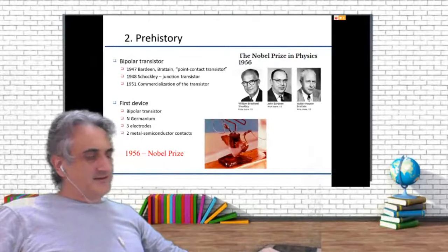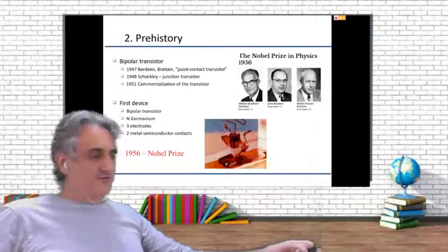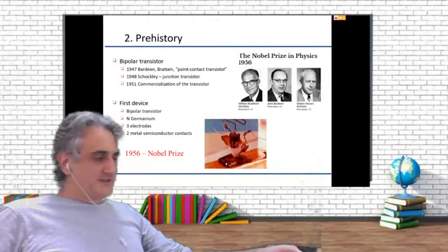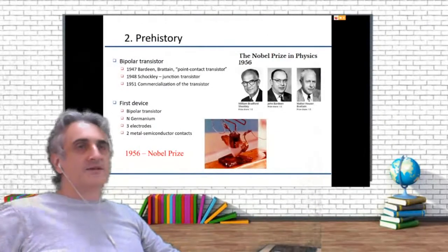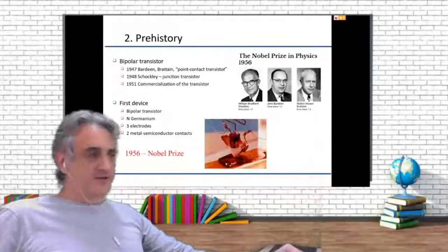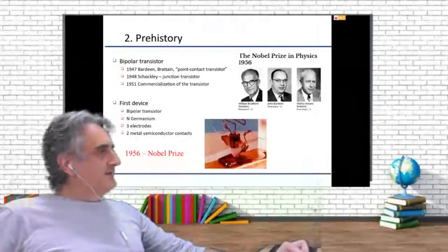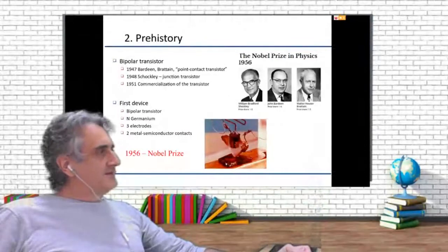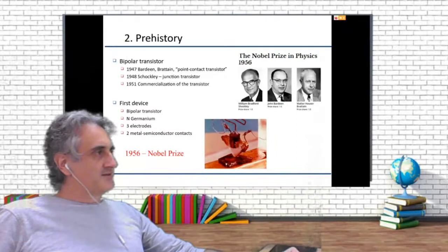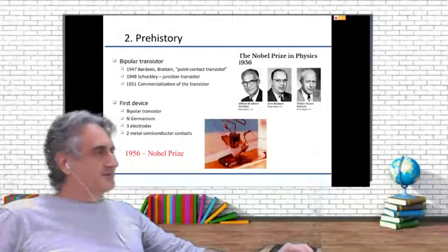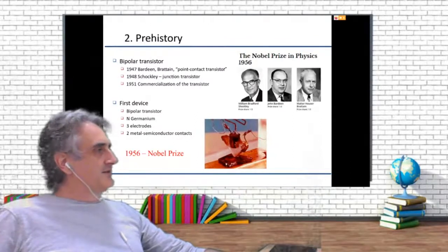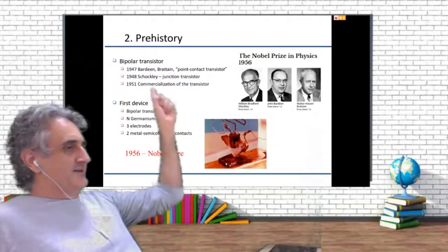AT&T Labs, the main phone company in the United States, was investing a lot of money to get some alternatives to these kinds of things. They had very good people working on that. And in 1947, Bardeen and Brattain discovered something called the point contact transistor.